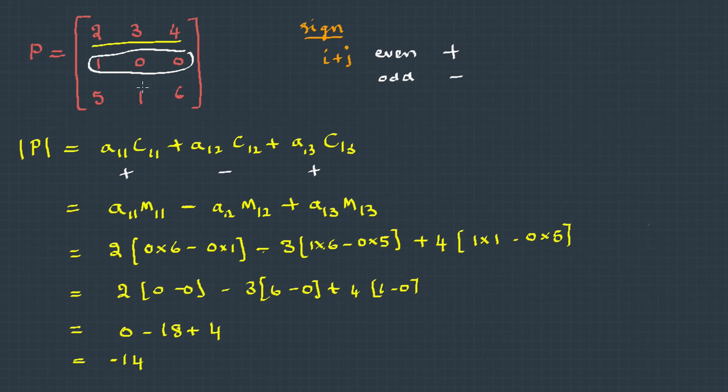So for the second row, this will be the formula. But this is 0 and even this is 0, so we just need to find this one, which is negative of a21 and minor 21.